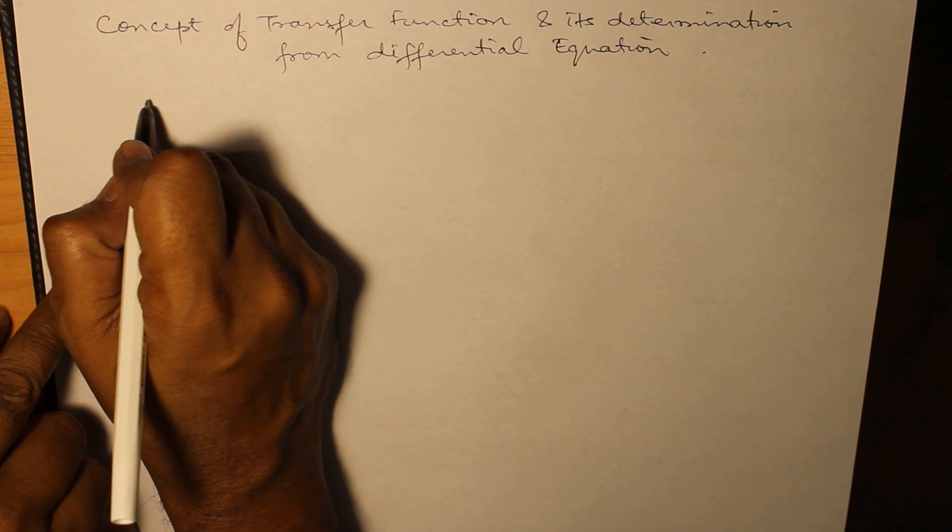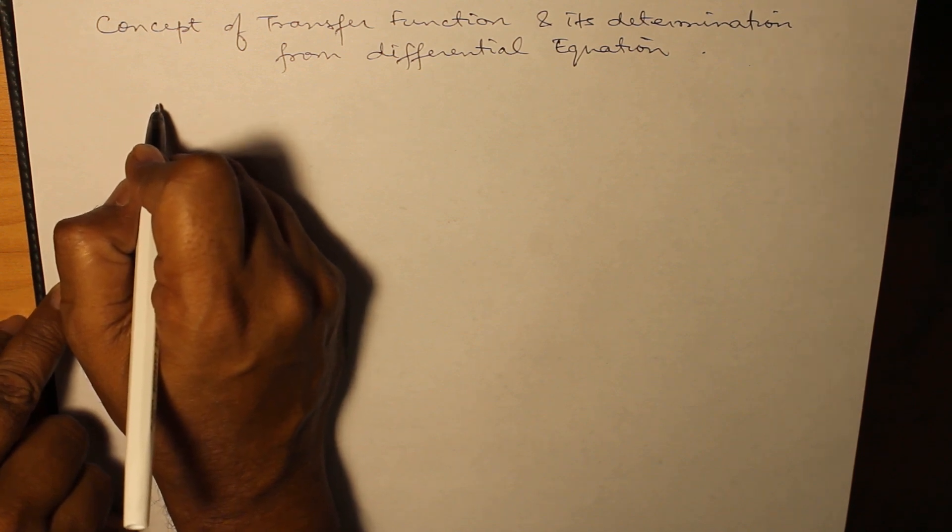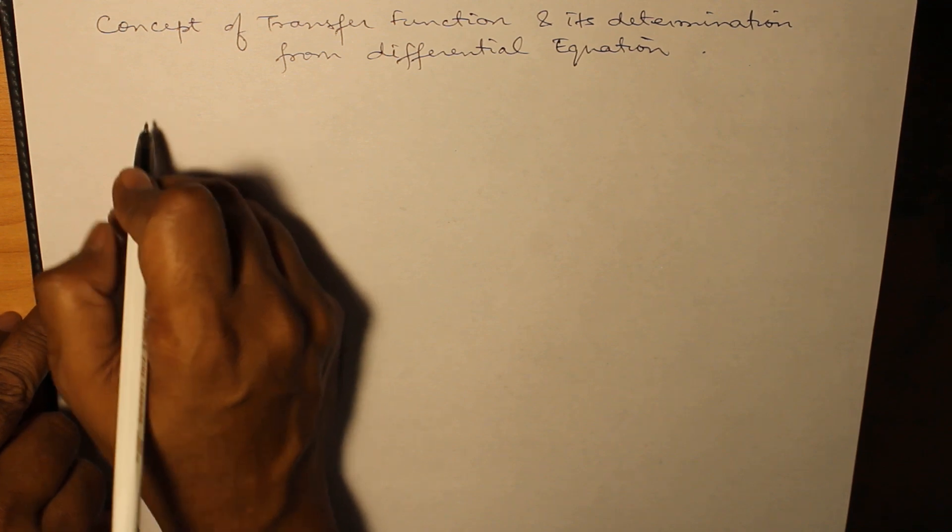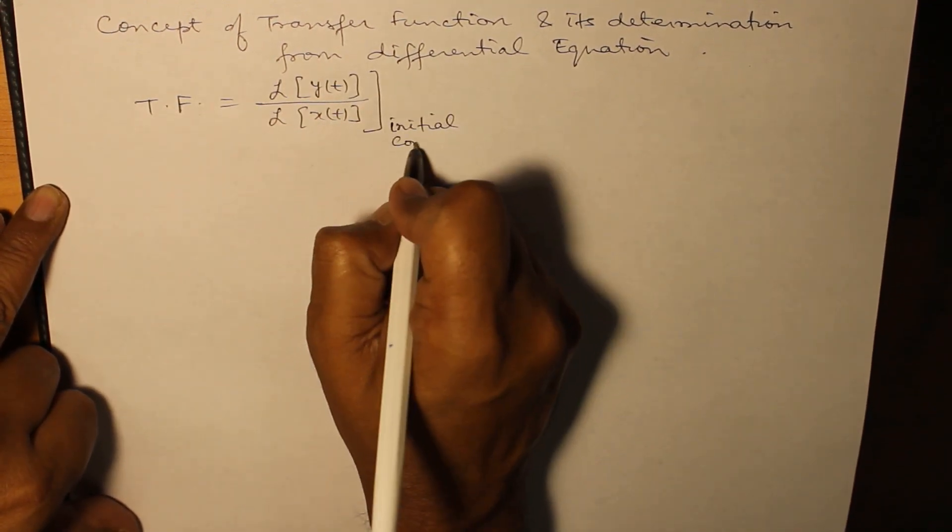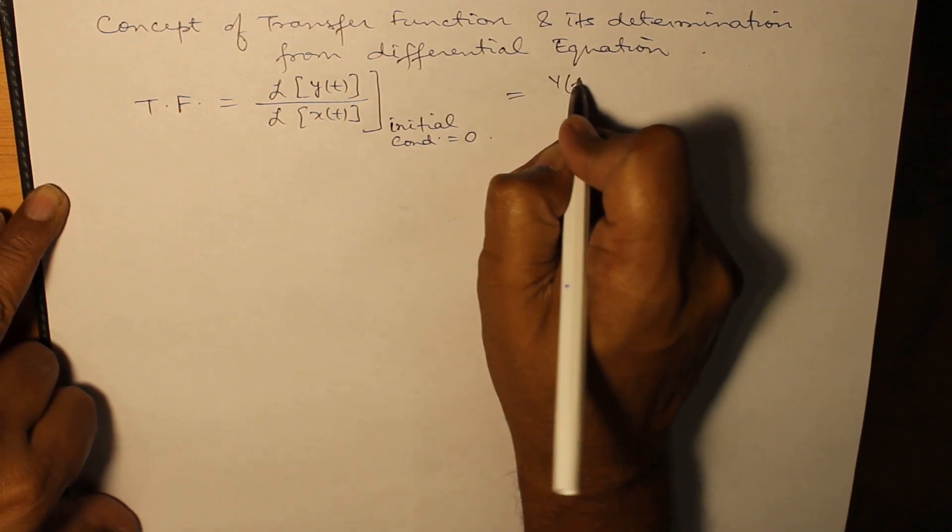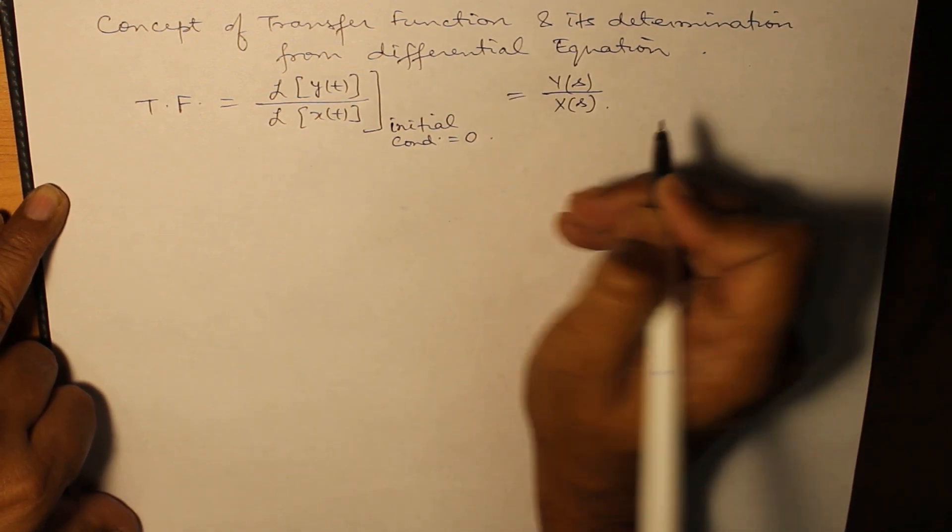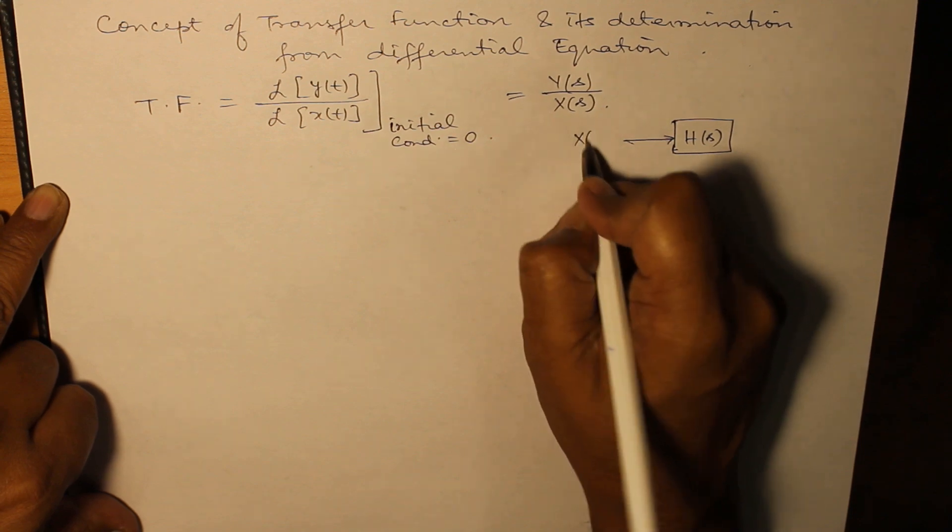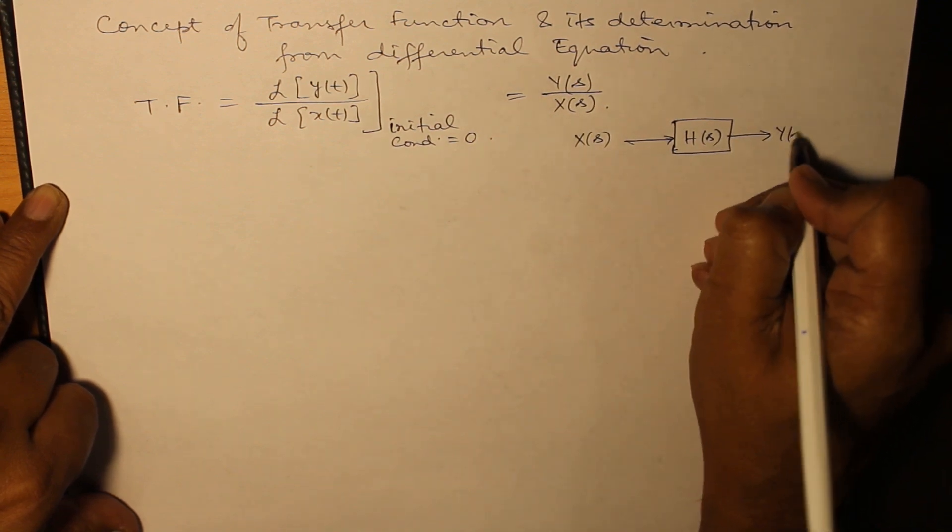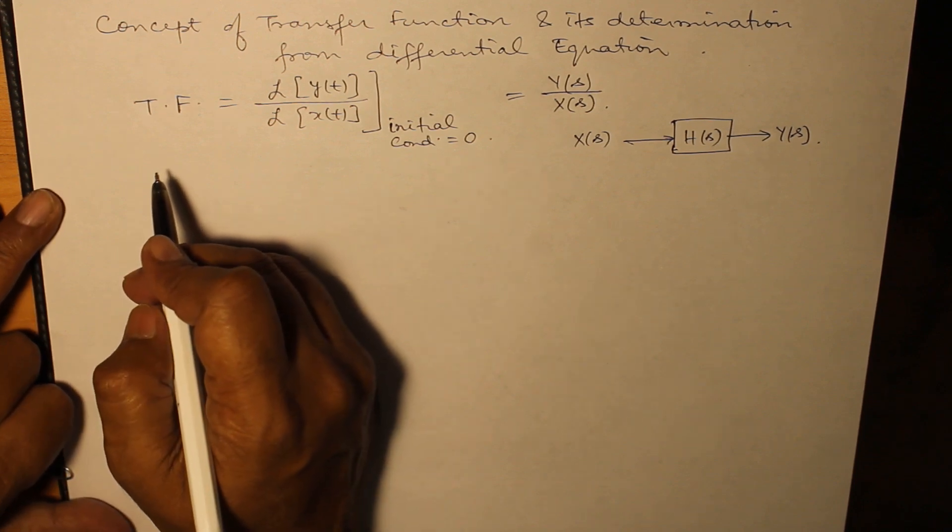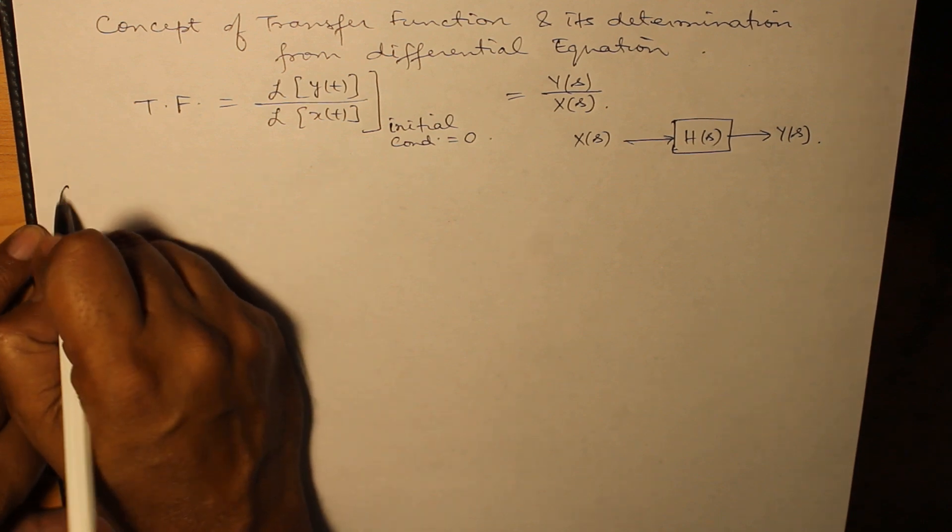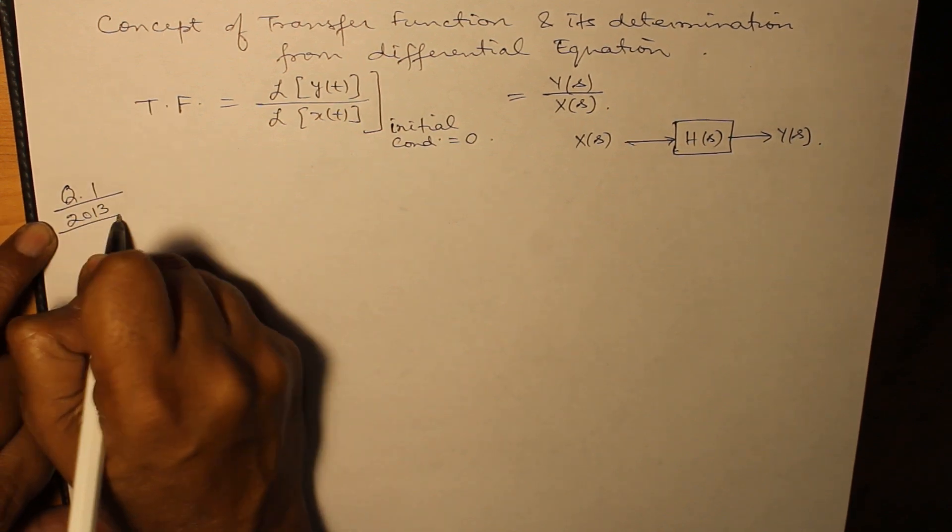Transfer function is defined as the ratio of the Laplace transform of the output variable to the Laplace transform of the input variable with initial conditions being 0, which is Y(s) over X(s) for the normal system which we have done earlier. Input being X(s) and output being Y(s). With the help of an example, let's determine the transfer function from a given differential equation. It was asked in 2013 at Nike University.